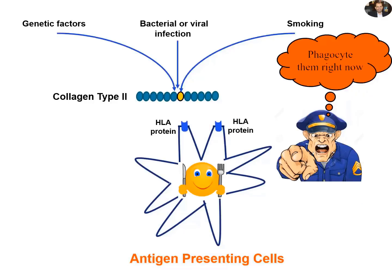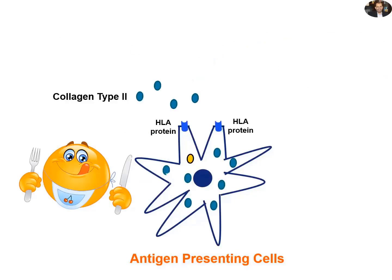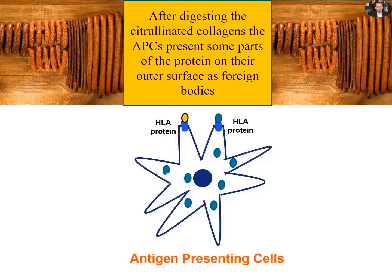As a result, the antigen presenting cells phagocytose these mutated collagen. After digesting these citrullinated collagens, the APCs present some parts of the protein on the outer surface as foreign bodies.